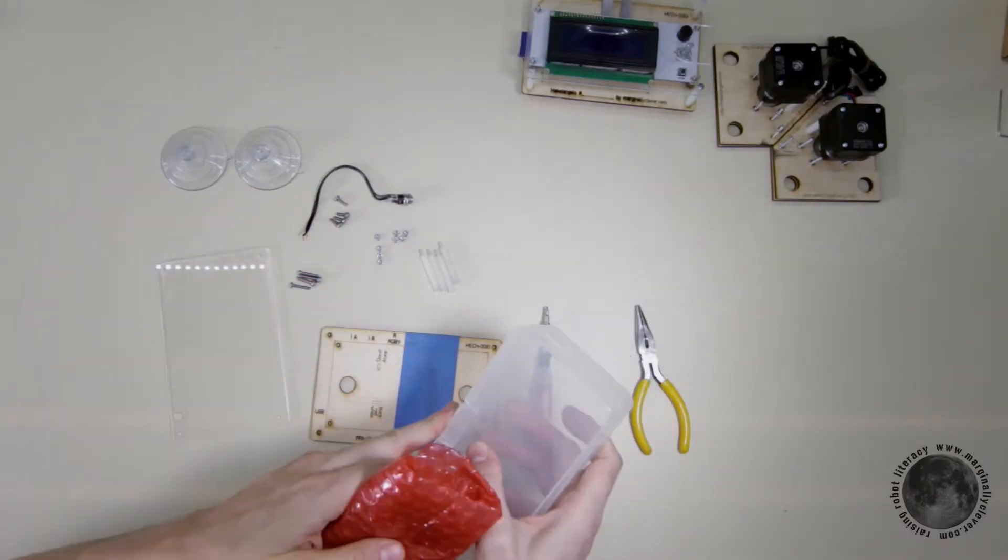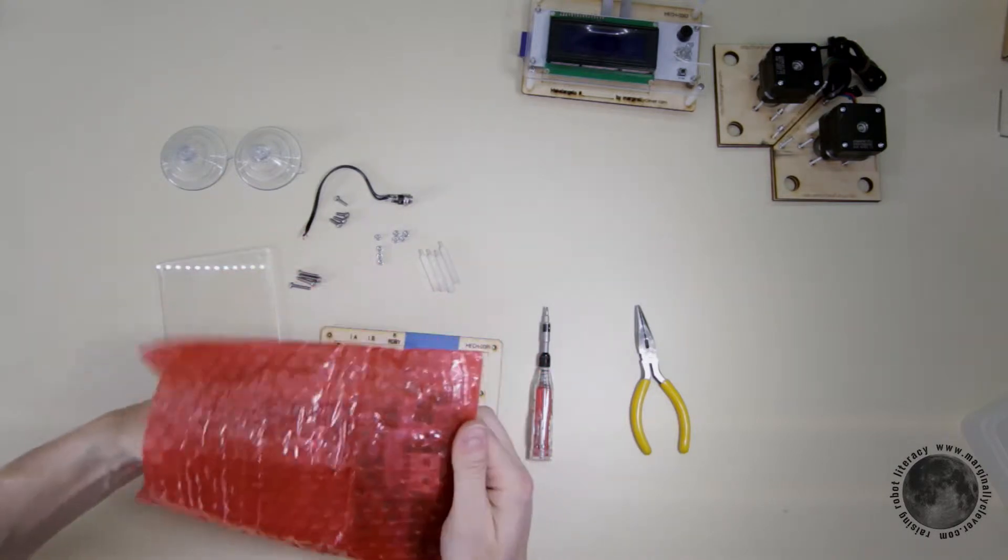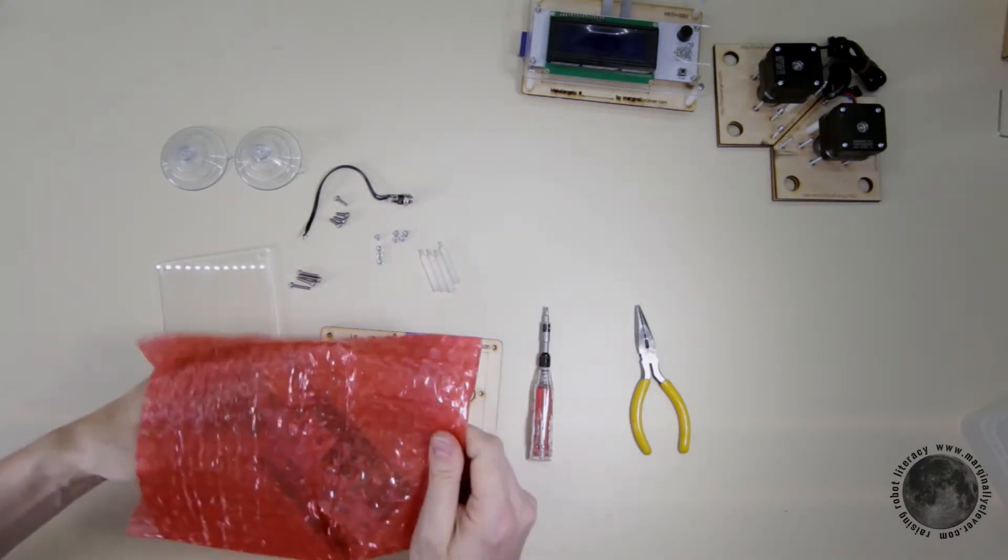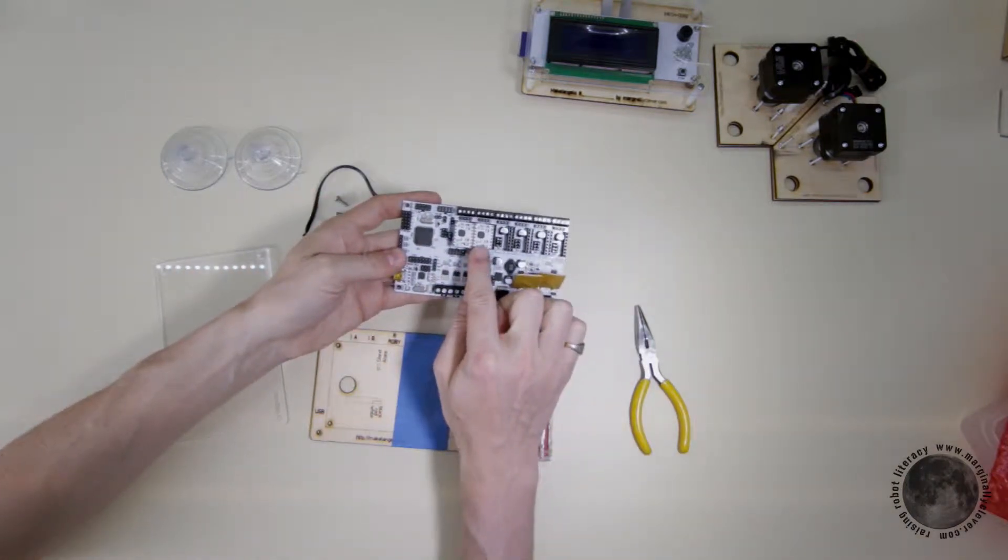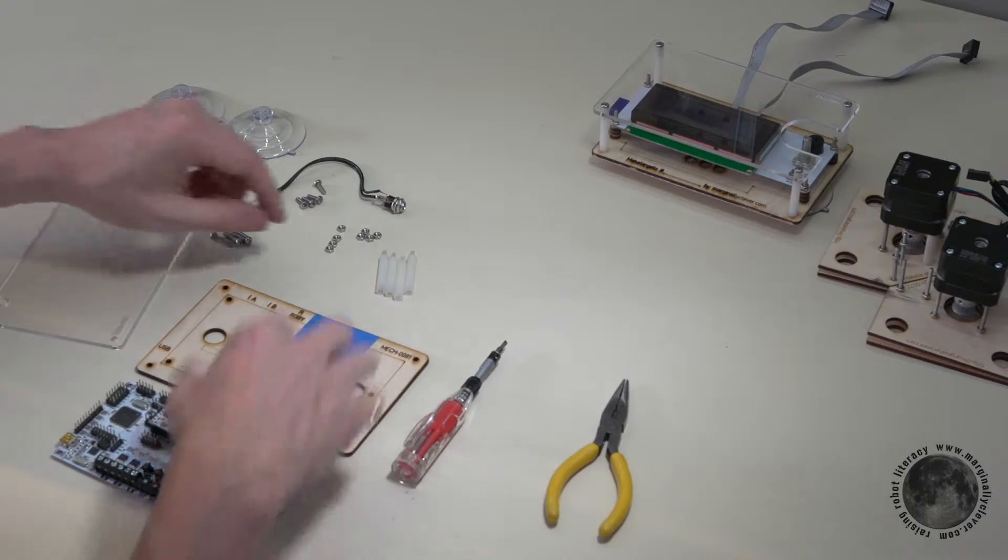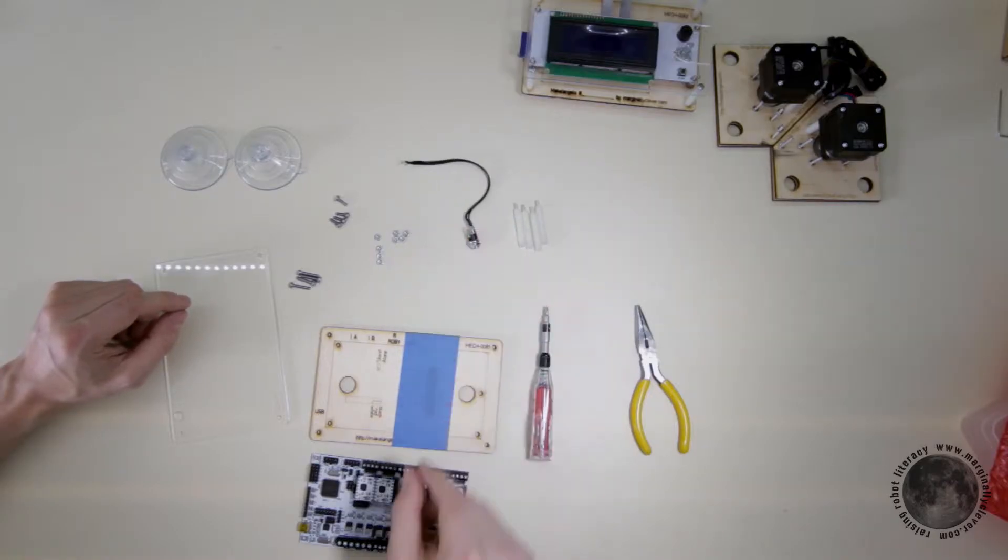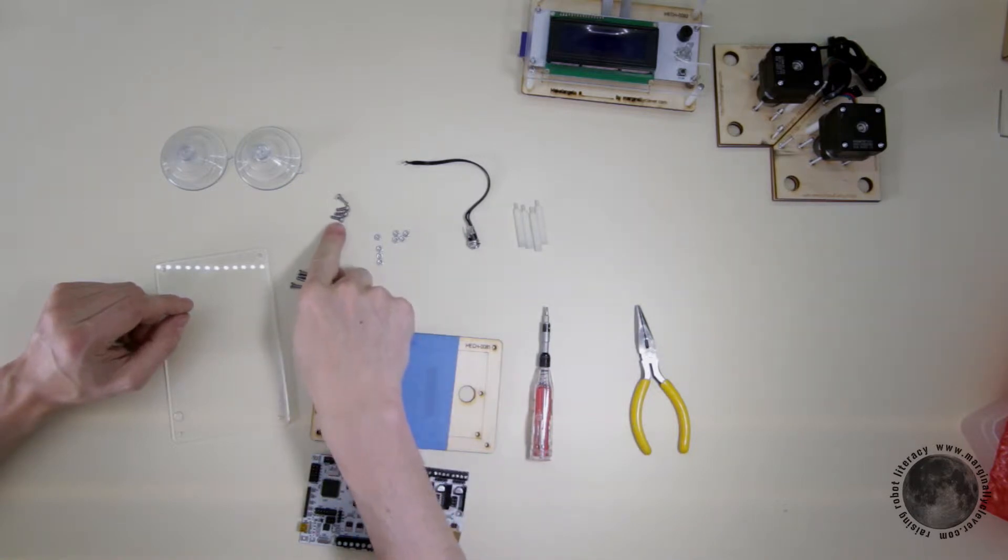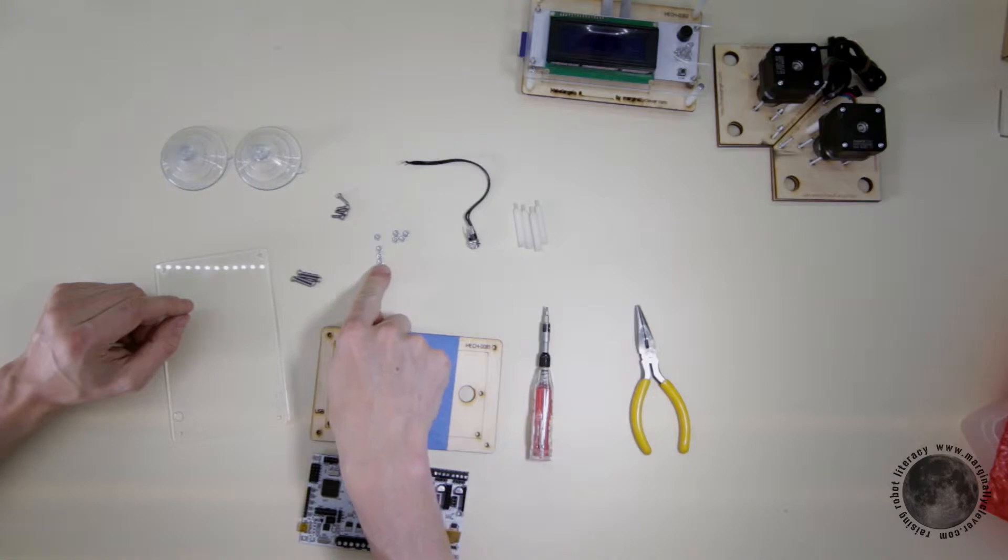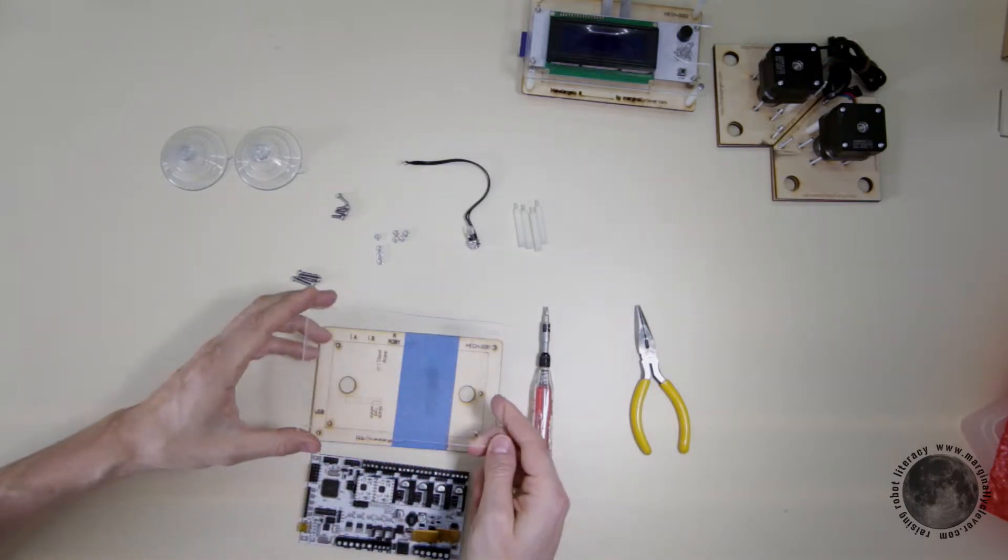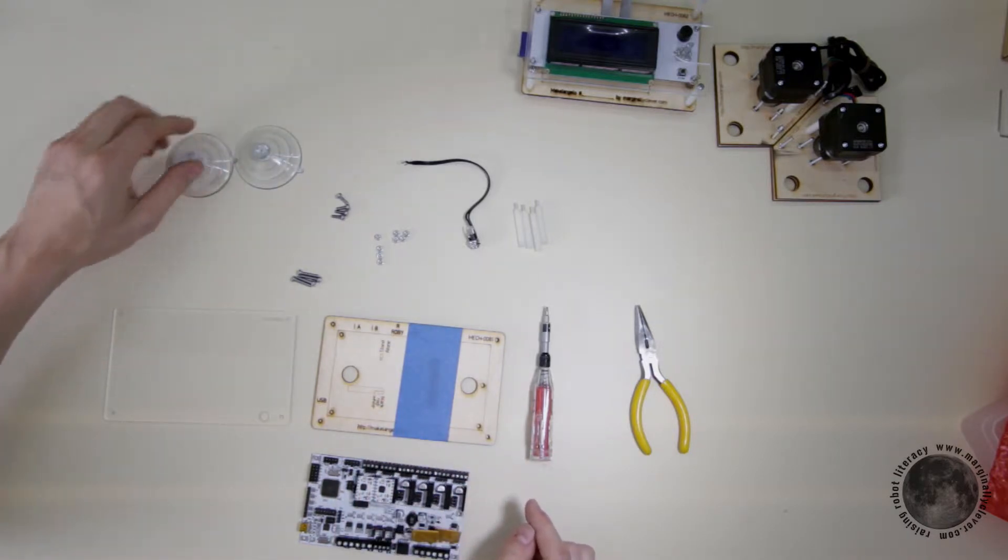The parts should include the Roma controller which will have at least two Polulu drivers on it, four spacers, your power plug, four M3x10, four M3x15, eight nuts, the clear acrylic cover, the backplate, and two suction cups.